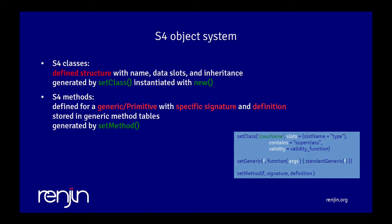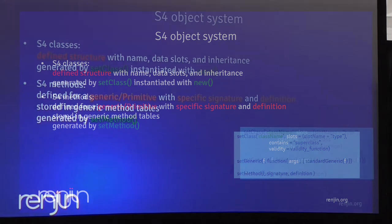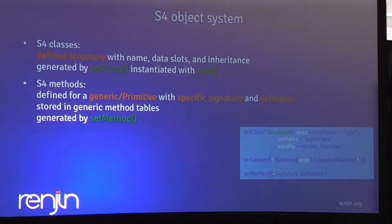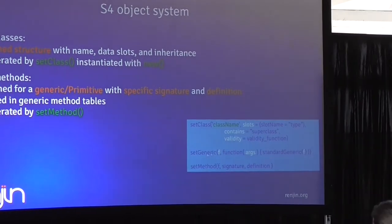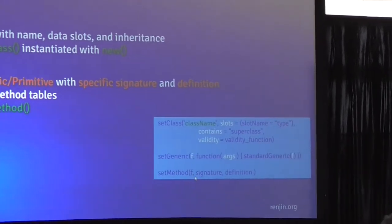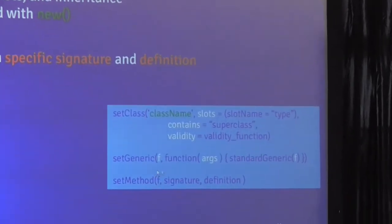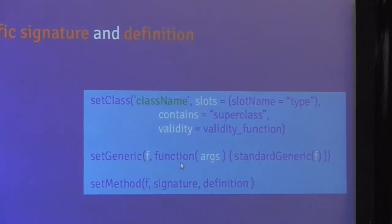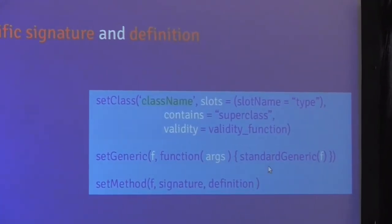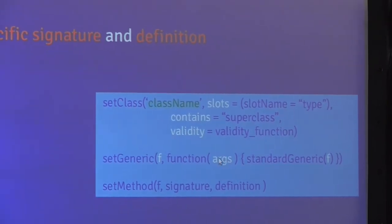Then you have the S4 methods that are generated with setMethod, and there you create a method table for a specific primitive or generic function. For primitives you don't need, they have the generic - it's basically the name of the primitive. For your own functions you create a generic function by calling standardGeneric and you define the arguments.